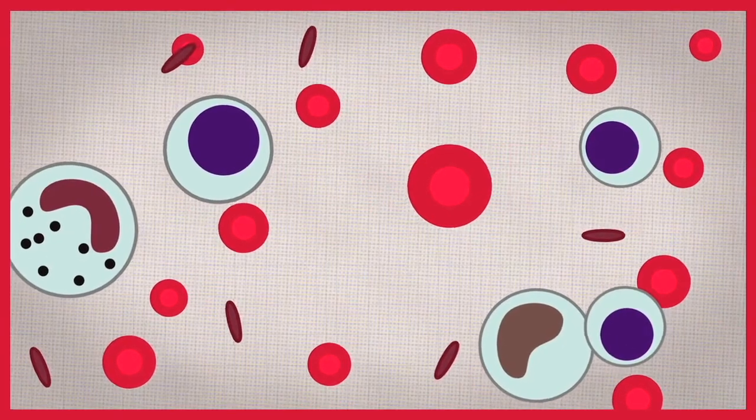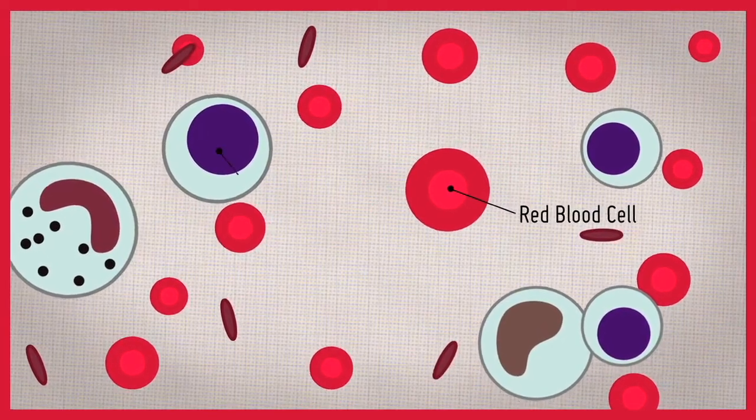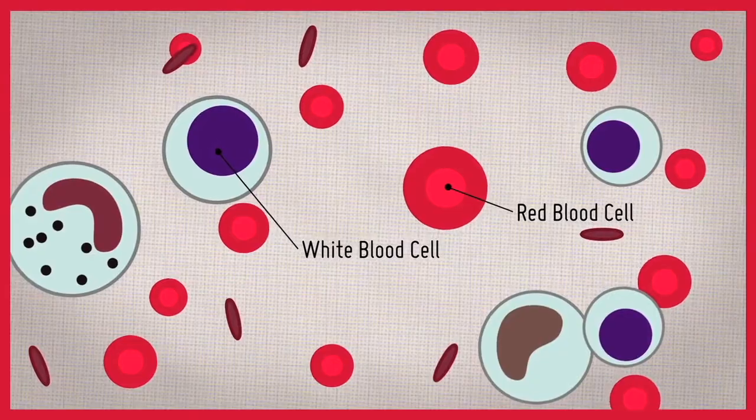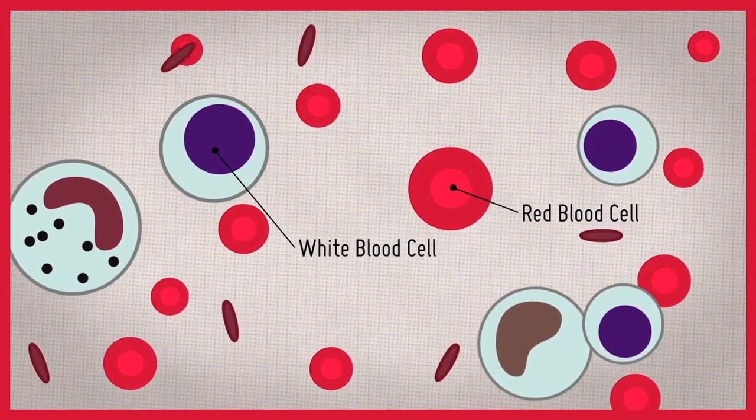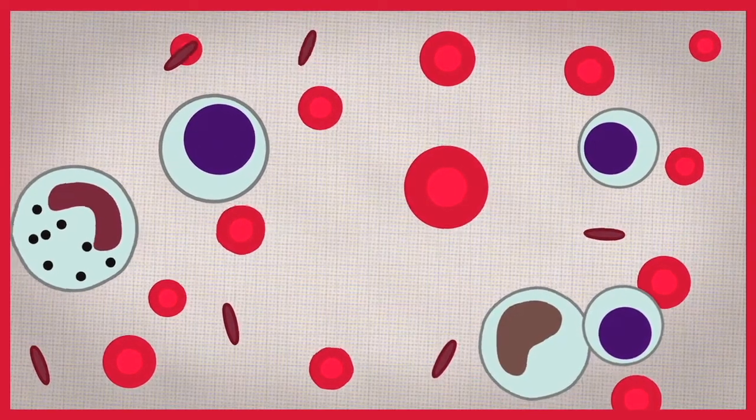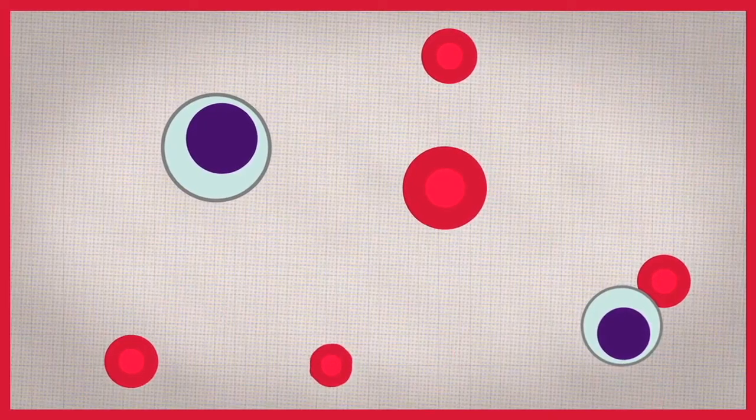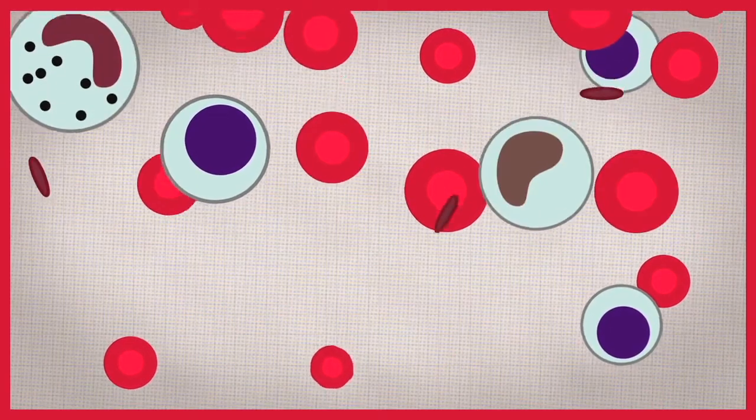Blood contains many different types of cells such as red blood cells and white blood cells, each having specific functions. Because most of these cells live for only a few days or weeks, they need to be constantly replaced.